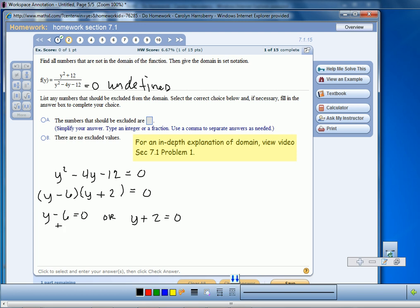To solve the first equation, we'll add 6 to both sides and we get Y equals 6. So this means that Y cannot equal 6.